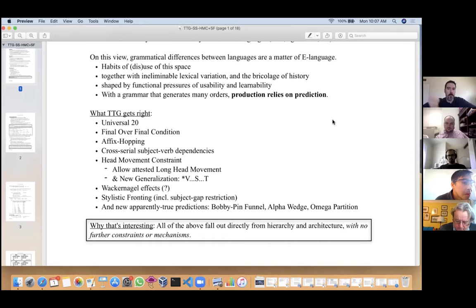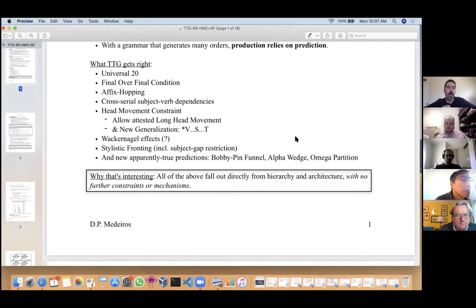A quick preview of what this theory does: it gives us nice explanations of at least the following things—Universal 20, the Final-Over-Final Condition, affix-hopping, cross-serial subject-verb dependencies. We get a version of the head movement constraint that allows attested long head movement configurations.